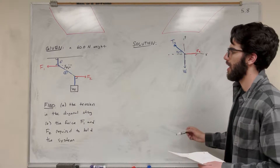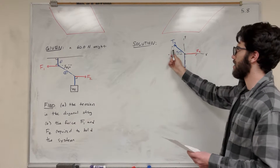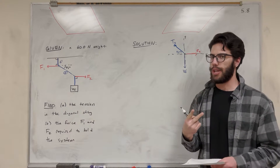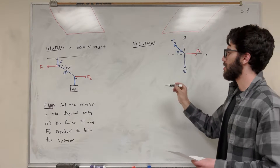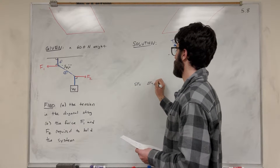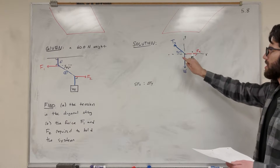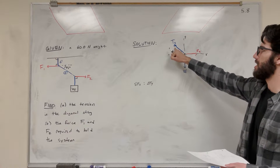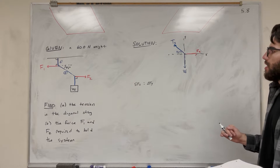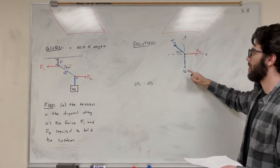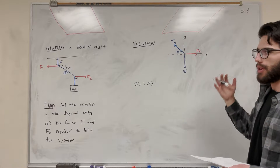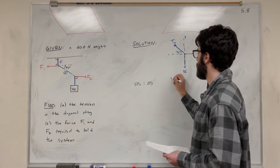Looking at our force body diagram, for part A we're trying to find the tension in the diagonal string — we want to find T2. If we do the sum of forces in the X, our two equations will involve T2 and F2, but we have two unknowns in one equation and won't be able to solve. But if we do the sum of forces in the Y, we have weight and T2, and since we're given weight we can solve for T2. That's why we want to do sum of forces in Y first.